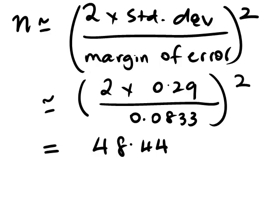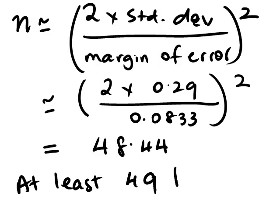So we need at least 48.44 batteries to be able to estimate the mean time. Now clearly we can't have 0.44 of a battery, so we need to round this number to a whole number. In sample size problems, it's always better to have a slightly larger sample size than necessary rather than a slightly smaller one. So in this problem, we would need at least 49 batteries to be able to estimate the mean.